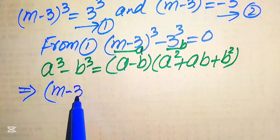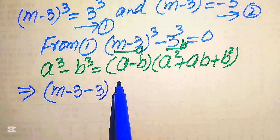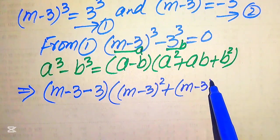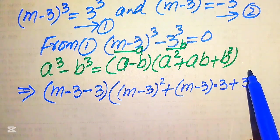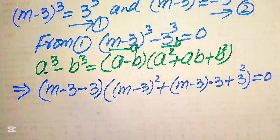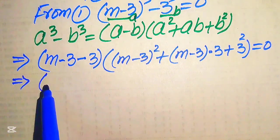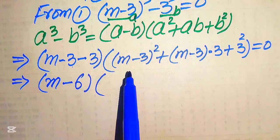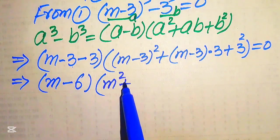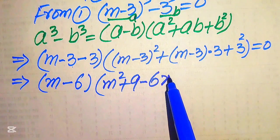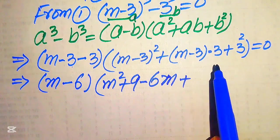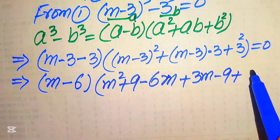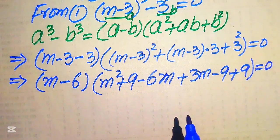After substituting, we get (m minus 3 minus 3) times [(m minus 3)² plus (m minus 3)(3) plus 3²] = 0. We expand (m minus 3)² as m² + 9 − 6m, and multiply 3 through the middle term to get 3m − 9, and 3² = 9. So the equation becomes (m minus 6)(m² + 9 − 6m + 3m − 9 + 9) = 0.